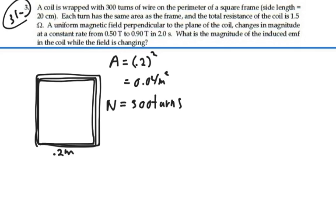We're told that there's a magnetic field going perpendicular to the plane of this coil. So let's just have it go into the page here.